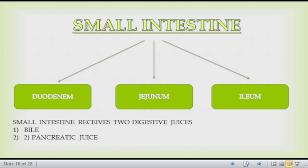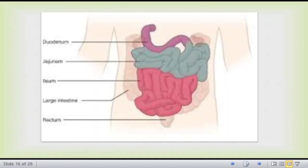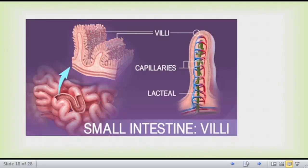Food then goes to the small intestine, which is divided into 3 parts: first the duodenum, then the jejunum, and then the ileum. In the small intestine we have two digestive juices: bile, secreted by the liver, and pancreatic juice, secreted by the pancreas.